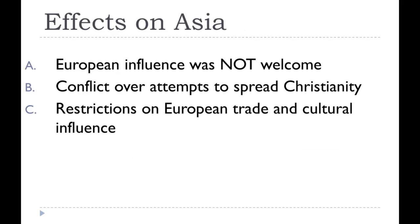In Asia, European influence was not welcome. Asians didn't want Europeans mingling or bringing their religion. They were fine with the trade money, but that's why they set up strict restrictions — large trading centers where farmers would bring goods, the government would buy from the farmers, and then sell to the Europeans, so that the local people and the Europeans would never actually meet.